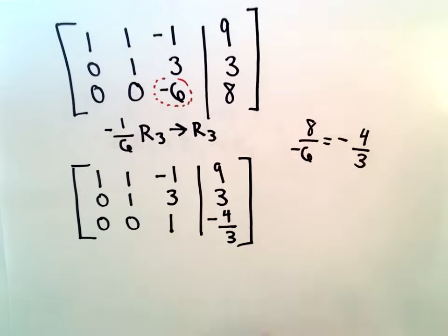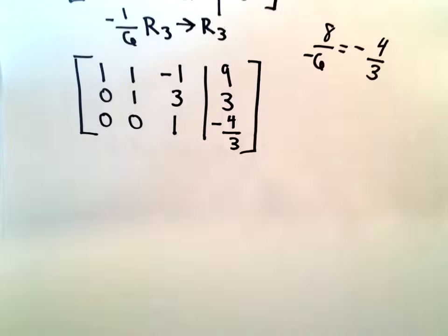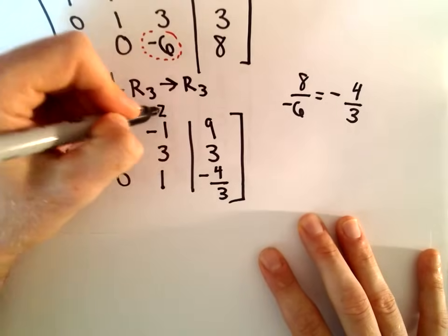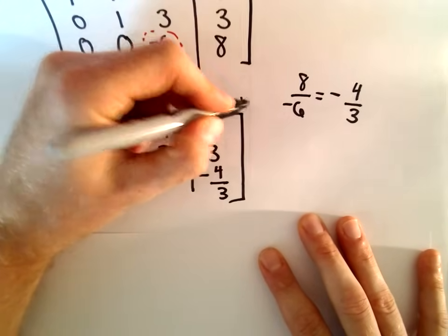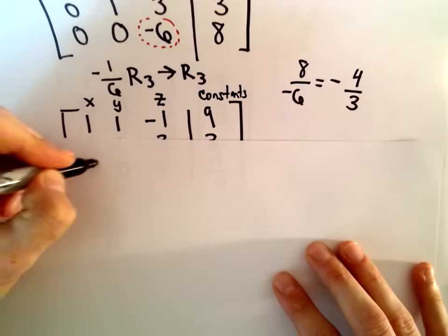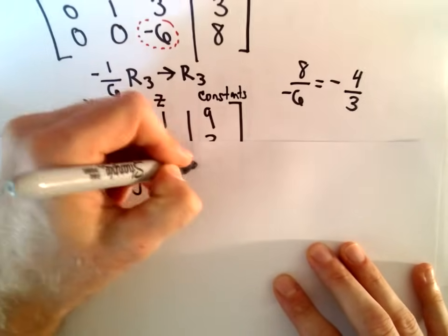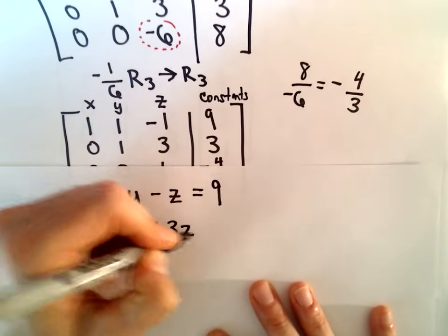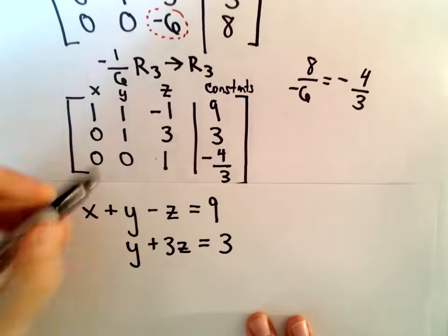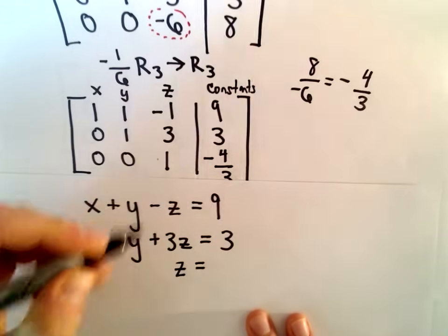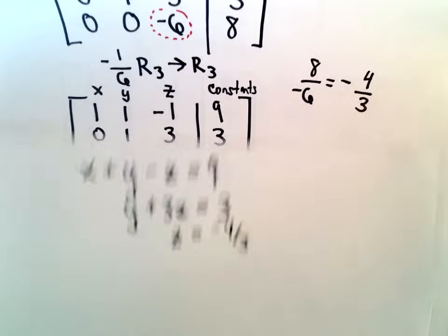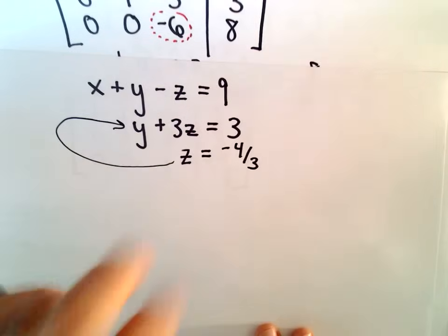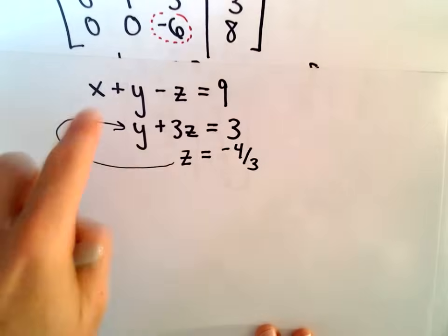Now we go back and write the corresponding set of linear equations and then use back substitution to solve. The column for x, y, z, and the constants give us: 1x plus 1y minus 1z equals 9; from the second row, 0x plus 1y plus 3z equals 3; and from the last row, positive 1z equals negative 4 thirds. So now we know what z equals.